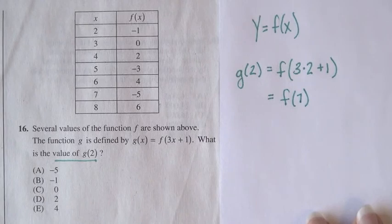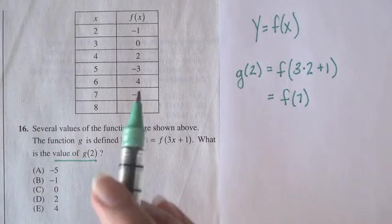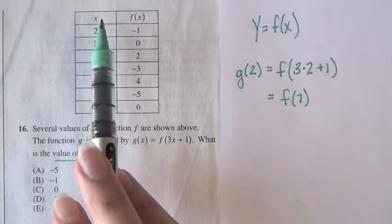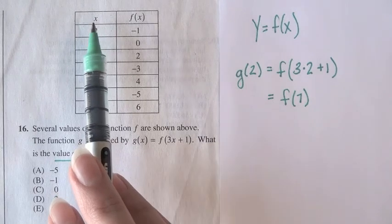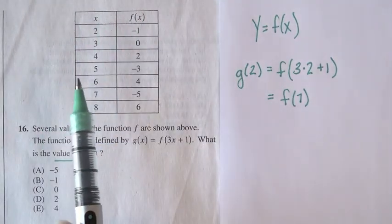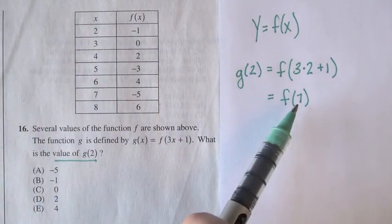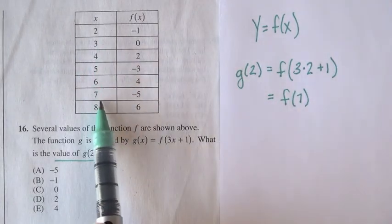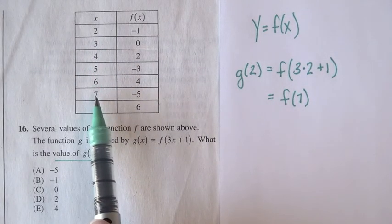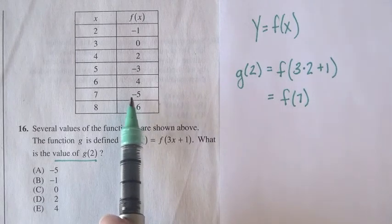Well, we have enough information to find f of 7. We can just go to this chart here. The x column says what are we putting in as the input. And the f of x column will give us the output. So the input is 7. So we'll go down to 7 in the chart. And it tells us that f of 7 is equal to negative 5.